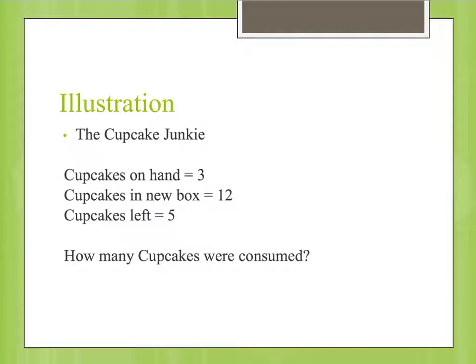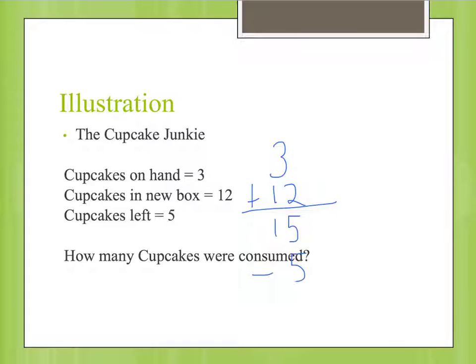Let's just take a look at this. We had three cupcakes. We bought 12. That gives us 15. We have five left. That means that 10 were consumed.